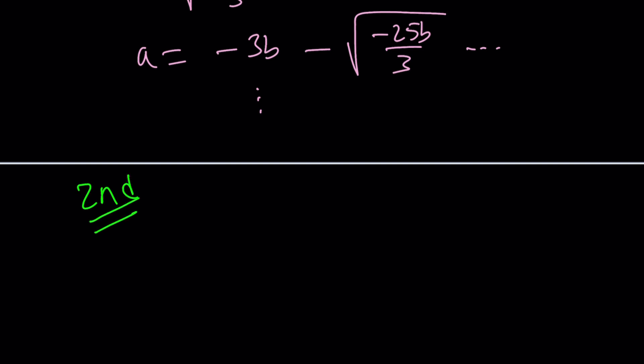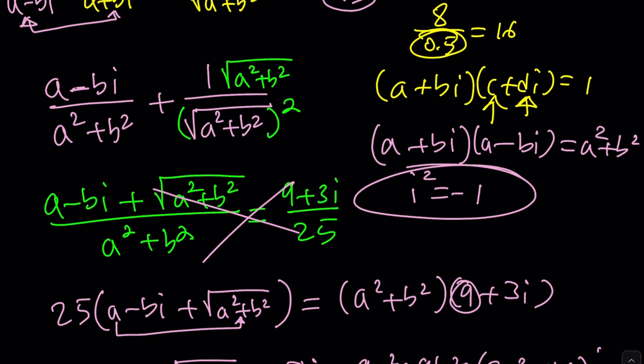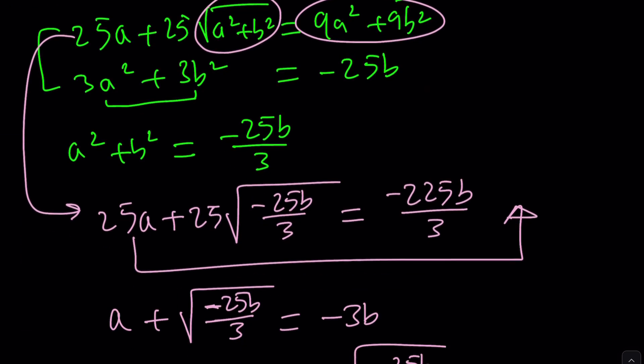Okay I'm going to go back to the original equation that we got here which is the A minus B I think. So let me go ahead and rewrite it. It's A minus B I plus the square root of A squared plus B squared divided by A squared plus B squared equals 9 plus 3I over 25. Okay and then once we separate the real parts we're going to be good. Now here's what I'm thinking.